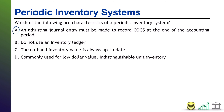D: commonly used for low value, indistinguishable unit inventory. That is true. The best situations for a periodic inventory system is when you have a lot of low dollar value, basically interchangeable goods, like gumballs. There's no point in tracking the sale of each and every gumball — just check how many are left in the machine, subtract how many you started with, and the difference is how many you sold. You know the value of a gumball, so you can figure out cost of goods sold. So A and D were true in this situation.